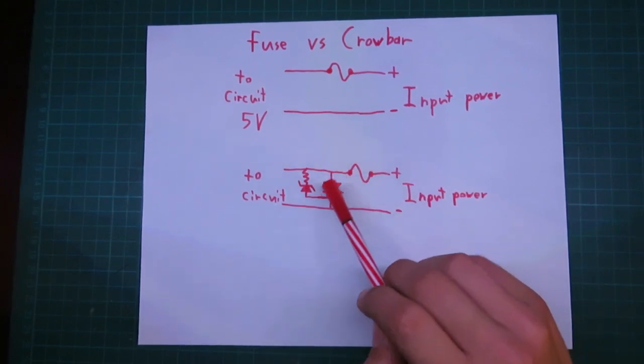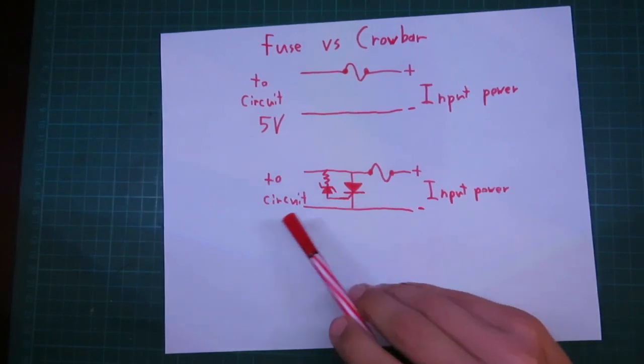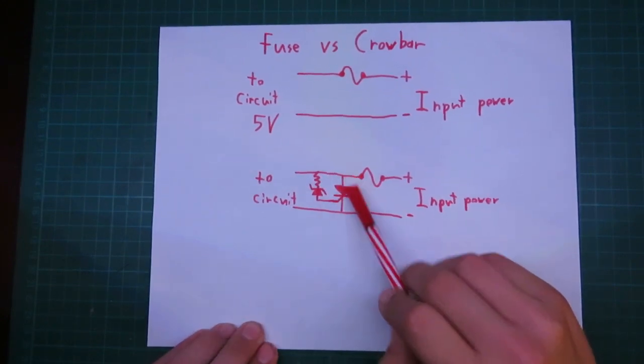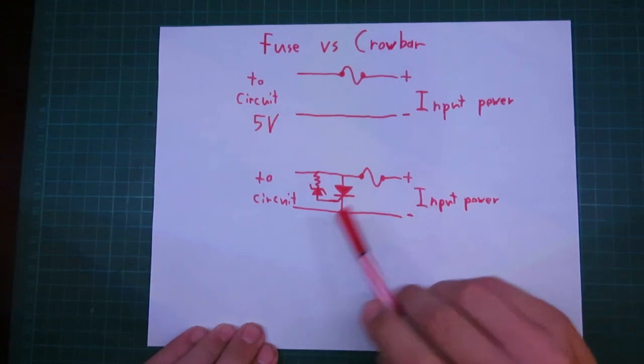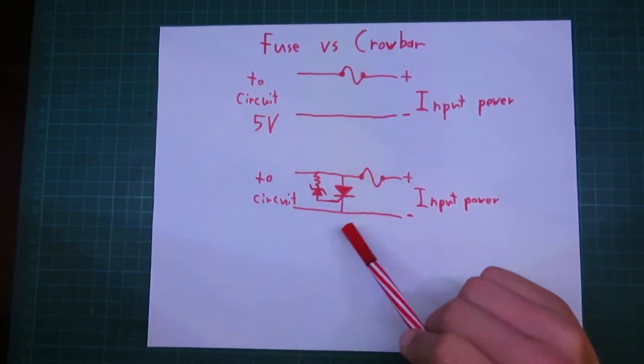So, what will happen is, let's say there is a voltage spike. The zener diode will break down, trigger the gate of the SCR, and the SCR will short out your input power until the fuse blows. And this happens very quickly.